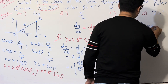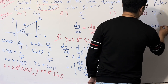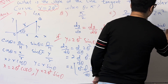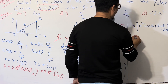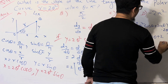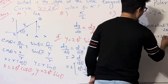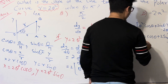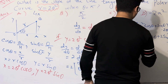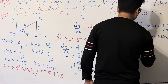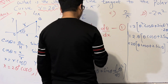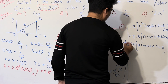This gives us 2[θ² cos θ + sin θ · 2θ]. Taking θ as a common factor: dy/dθ = 2θ(θ cos θ + 2 sin θ). This is the value of dy/dθ.